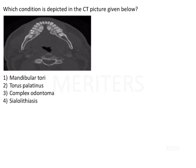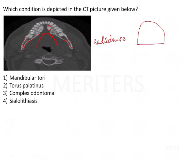The question asks which condition is depicted in the CT picture. What we are seeing in this CT scan is globular masses which are radio-dense on the lingual surface. We can presume this could be the tongue region. The bone appears to be more like the mandible rather than the maxilla, because for the maxilla you would see a proper radio-opaque structure throughout. So this appears to be the mandible, with globular white radio-opaque structures on the lingual surface.